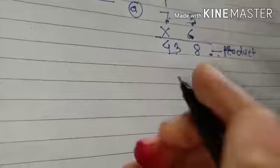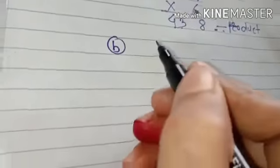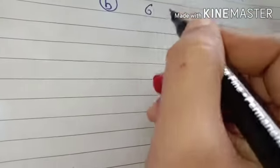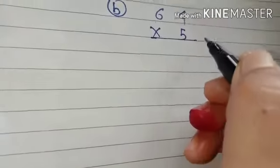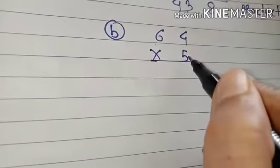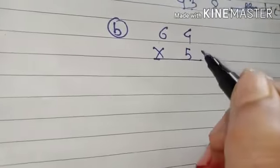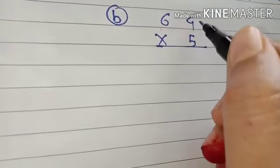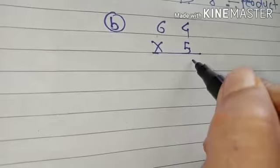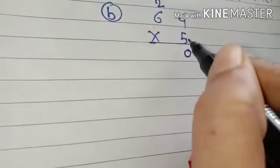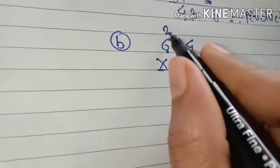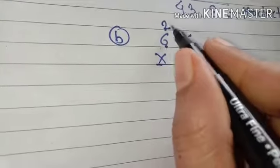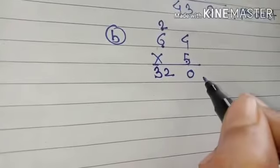Another example we will see, 64 multiply with 5. First we 5 multiply with 4, 5 4's are 20. 5 6 are 30, 30 plus we have to add, 31, 32. This answer is what? 320.